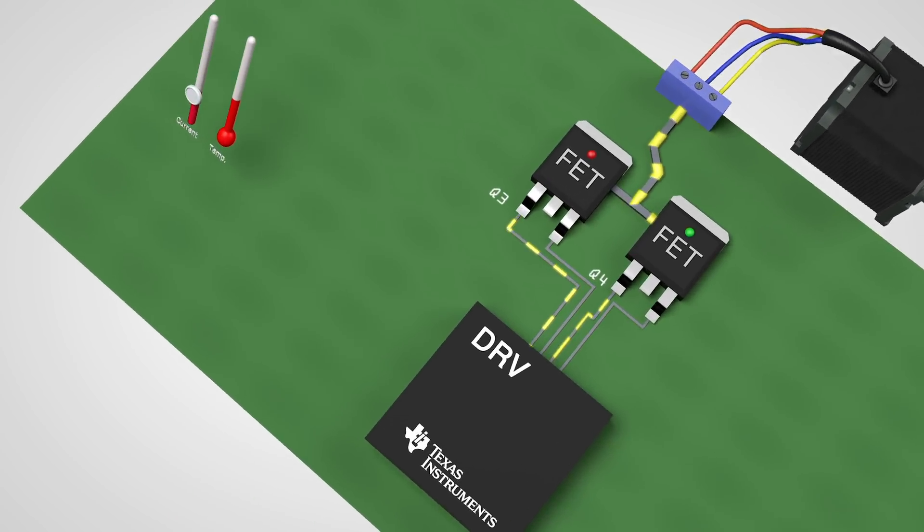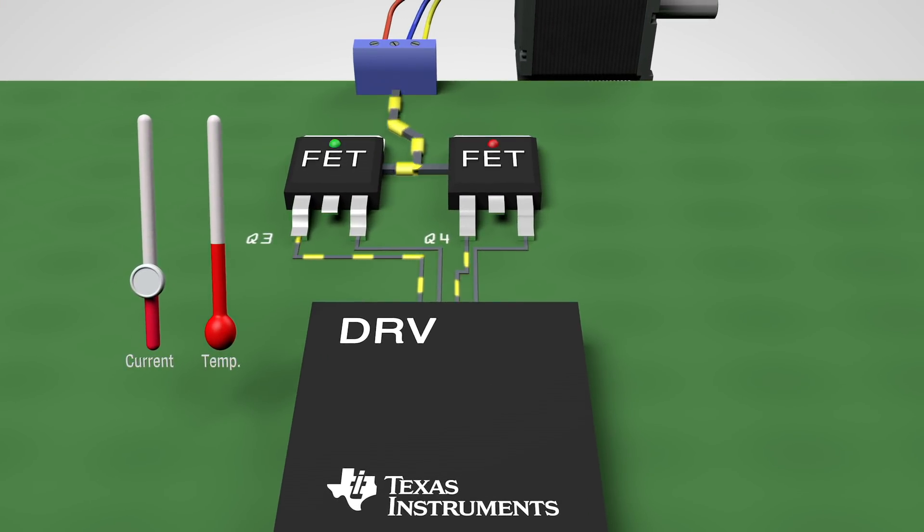As shown in this single-phase motor drive example, some applications require FETs to be turned on very quickly. This reduces power dissipation and increases efficiency, but could cause unwanted switch node ringing and electromagnetic radiation, otherwise known as EMI.